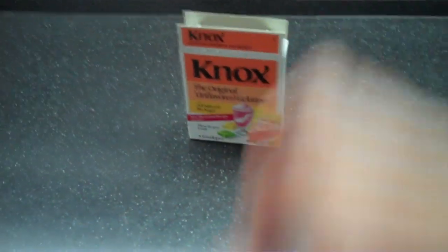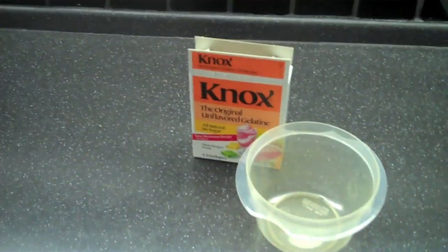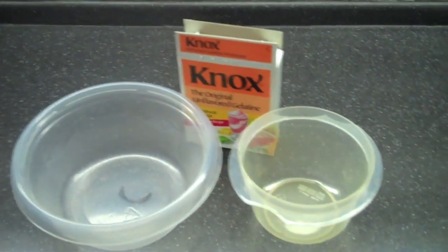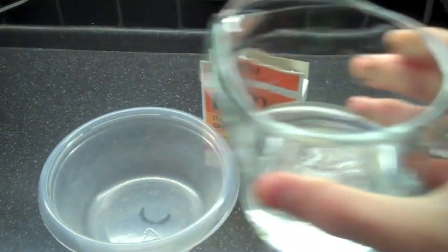To make ballistics gelatin, more commonly known as ballistics gel, you'll need gelatin, two containers, and distilled water.